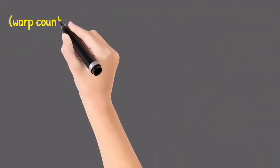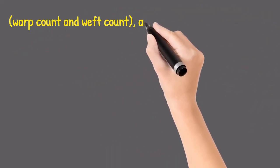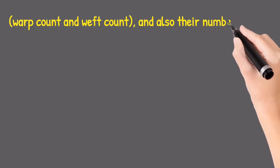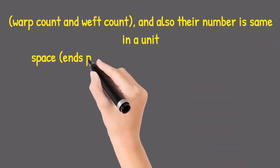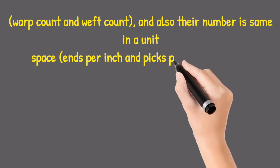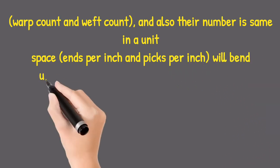Warp count and weft count, and also their number, is same in a unit space. Plain weave ends per inch and picks per inch will depend upon twill.